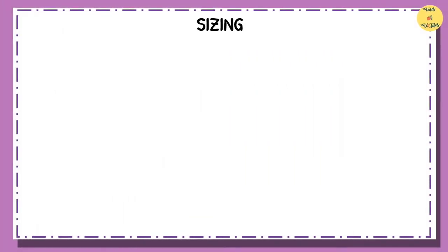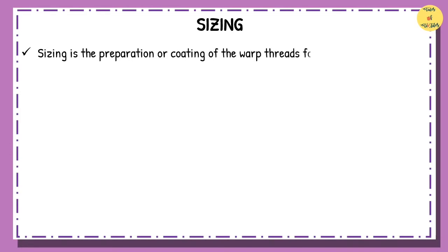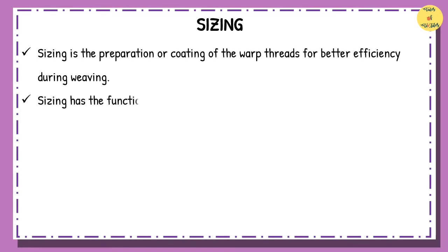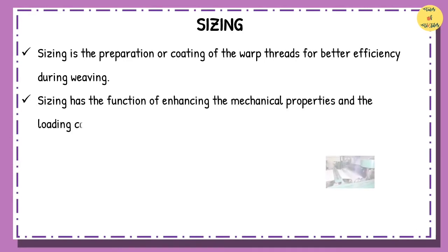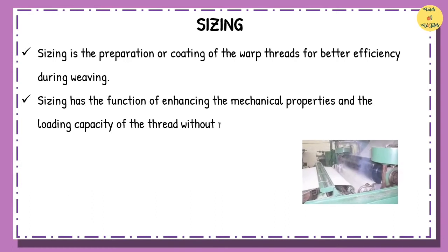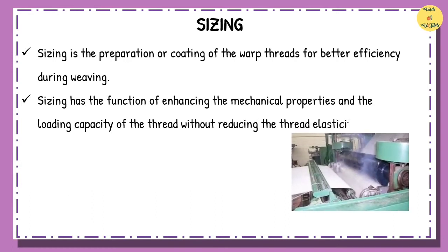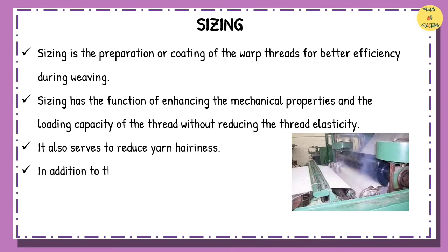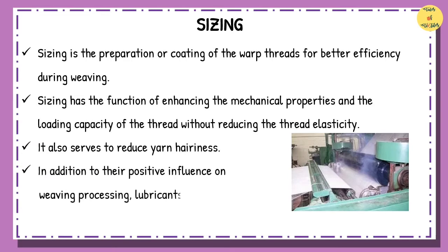Sizing is the preparation or coating of the warp threads for better efficiency during weaving. Sizing has the function of enhancing the mechanical properties and the loading capacity of the thread without reducing the thread elasticity. It also serves to reduce yarn hairiness. In addition to their positive influence on weaving processing, lubricants need to be recyclable, as about half of all textile sewage is produced during desizing.